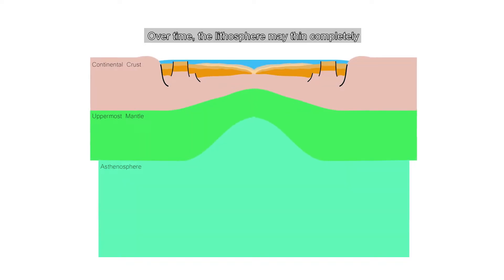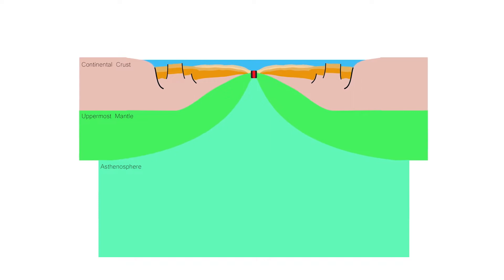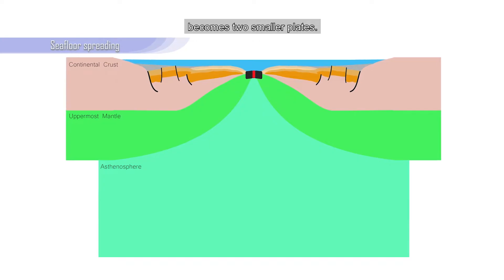Over time, the lithosphere may thin completely, allowing the asthenosphere to reach the surface. When this happens, seafloor spreading begins, and the single plate becomes two smaller plates.